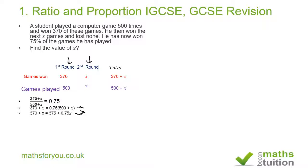Moving 0.75X to the left-hand side changes its sign to minus 0.75X. Similarly, moving 370 to the right-hand side changes its sign, giving us X − 0.75X = 375 − 370. The left-hand side becomes 0.25X and the right-hand side becomes 5.